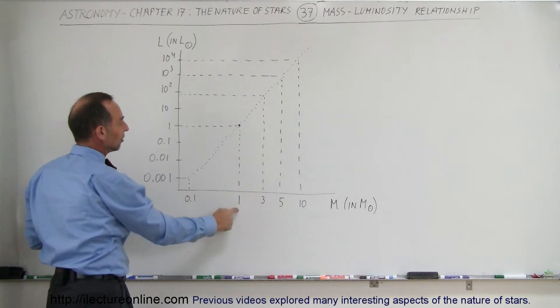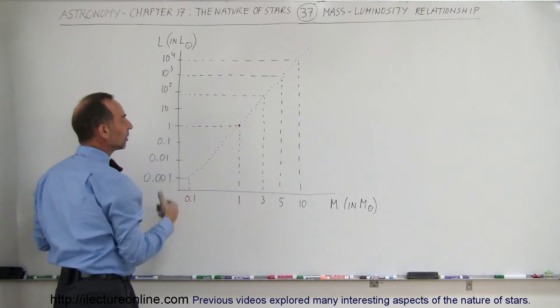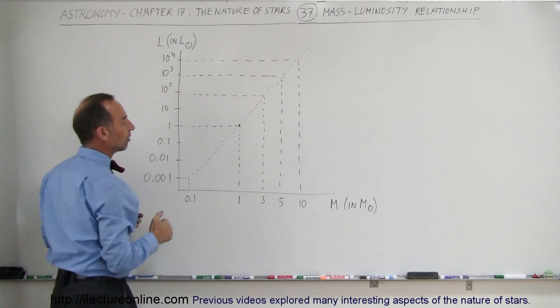Notice that if this is the sun, we have 1 times the mass of the sun and 1 times the luminosity of the sun right there. But then if we have a star that is 3 times the mass, it is roughly about 100 times the luminosity.